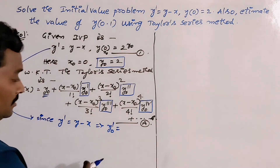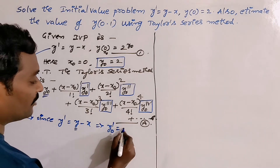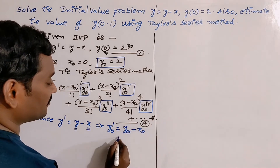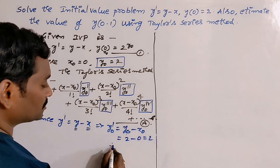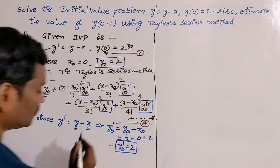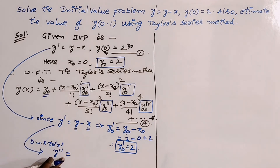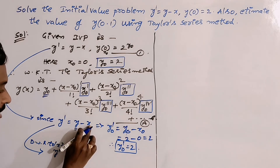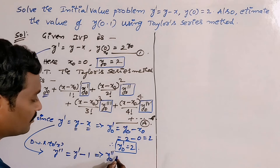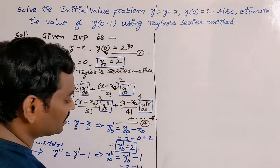In the Taylor series method, whenever we have a variable we replace y by y₀ and x by x₀. Here y₀ = 2 and x₀ = 0, so y₀' = 2 - 0 = 2. Taking another derivative with respect to x: y'' = y' - 1. So y₀'' = y₀' - 1 = 2 - 1 = 1.